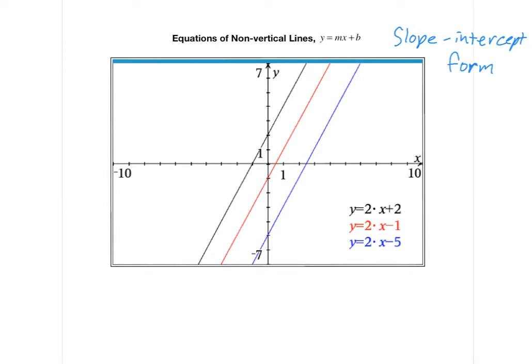All three of these equations down here, y equals 2x plus 2, y equals 2x minus 1, and y equals 2x minus 5, are in slope-intercept form. The three lines are already graphed here for you. The blue line goes with y equals 2x minus 5, the red line goes with y equals 2x minus 1, and the black line goes with y equals 2x plus 2. We want to analyze these three equations to see if that tells us something important about these three lines that we see.